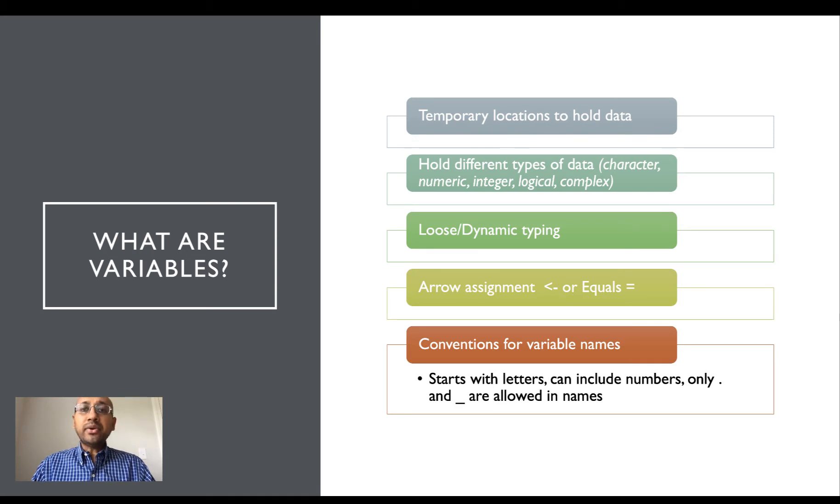How do you assign values to variables? R uses the equals operator or arrow assignment to assign a value to a variable. The variable name is specified on the left hand side and the value corresponding to the variable is specified on the right hand side.